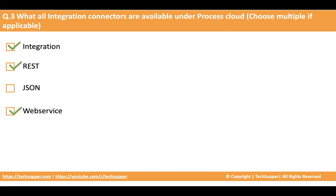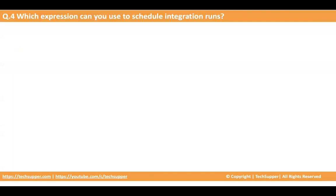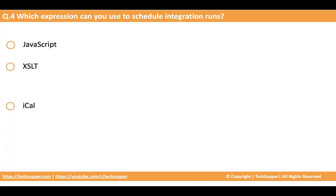The fourth question: which expression can you use to schedule an integration run? I hope everybody has developed a scheduled integration. There are multiple options to define the frequency, but what is the expression used? The options are: JavaScript, XSLT, iCal, and XPath. If you don't know, go to your scheduled integration, click on the actions menu of the schedule, and go to the schedule screen to see the options.